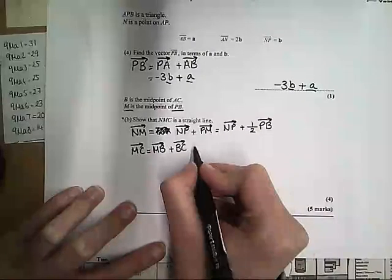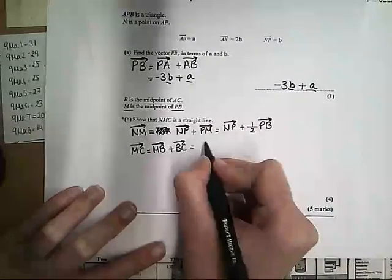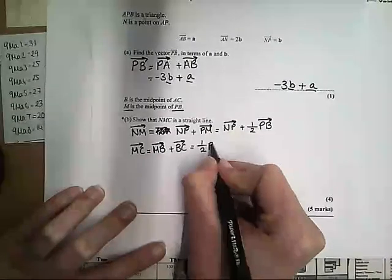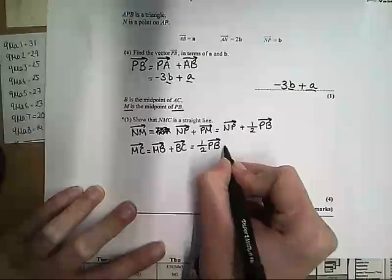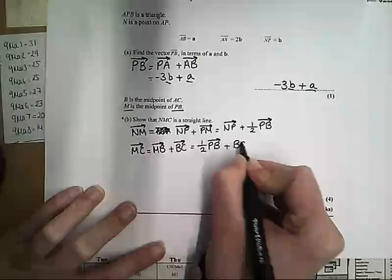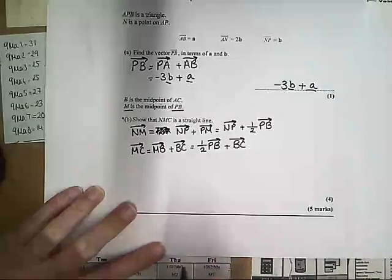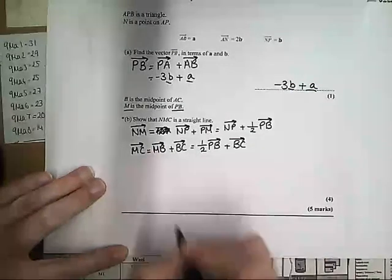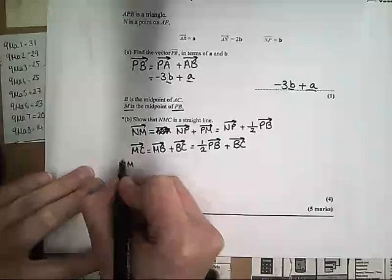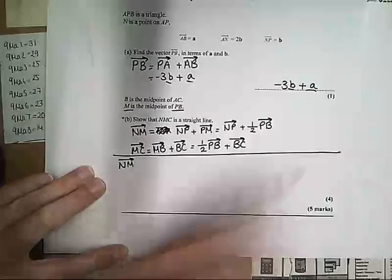Okay, and then similarly, to go from M to B, that is again half of P to B. And then we know that B to C, we can work out what B to C is, because we know that B is the midpoint of AC. So what I'm going to do is I'm going to do N to M first, and then we'll do N to C.